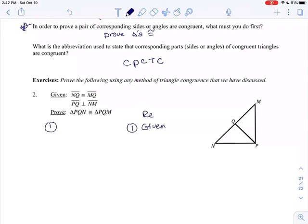The abbreviation that I use to prove that those corresponding sides or angles are congruent is CPCTC, corresponding parts of congruent triangles are congruent. But remember, first you must prove that the triangles are congruent to each other. So let's try a proof together. Statements on the left, reasons on the right.